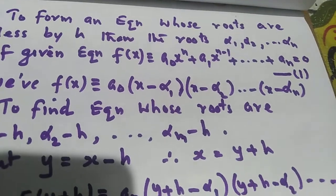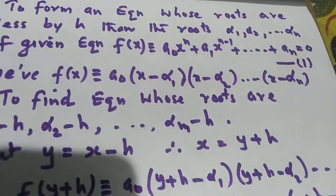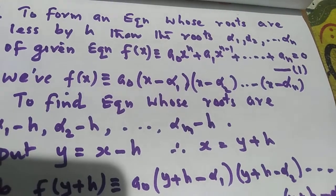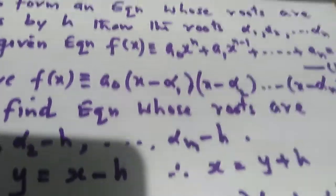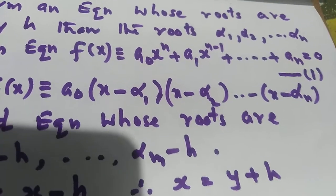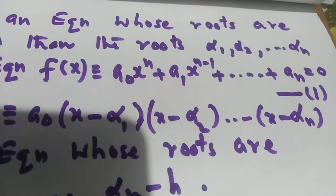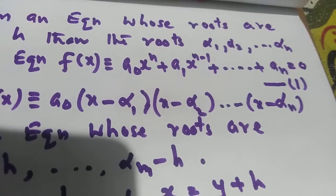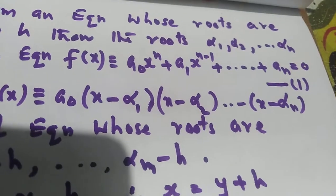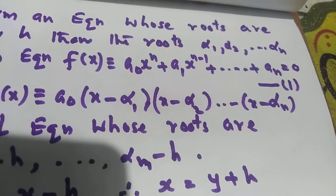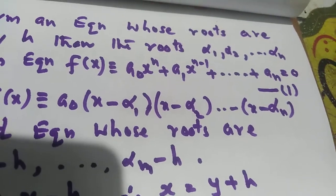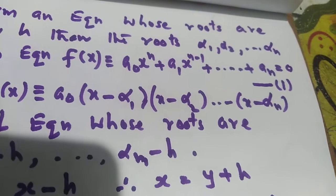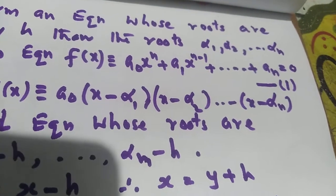To form an equation whose roots are less by h than the roots alpha 1, alpha 2, etc., alpha n of the given equation f(x). The equation f(x) has roots alpha 1, alpha 2, etc., alpha n as the values of x. We need to find an equation whose roots are alpha 1 minus h, alpha 2 minus h, etc., alpha n minus h.